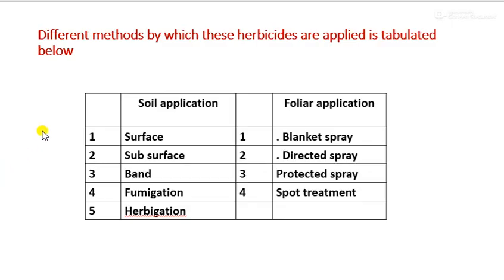Through soil application, the different methods by which these herbicides are applied are: first is surface application, second is subsurface, third is band application, fourth is fumigation, and fifth is herbigation. Through foliar application: first is blanket spray, then directed spray, protected spray, and spot treatment. These are the two types of application — soil application and foliar application.